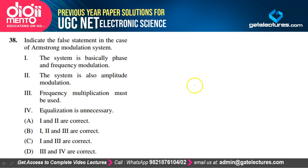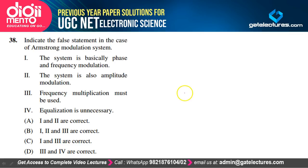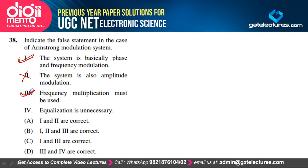False statements about the Armstrong modulation system: (1) It is a phase and frequency modulation system — true; (2) It is also amplitude modulation — false; (3) Frequency multiplication must be used — true; (4) Equalization is unnecessary — false, it is necessary. Statements 2 and 4 are false, so only 1 and 3 are correct. Option C is correct.